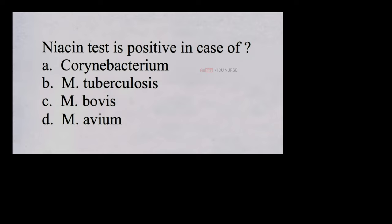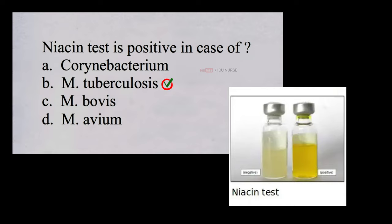Niacin test is positive in case of A. Corynebacterium, B. M. tuberculosis, C. M. bovis, D. M. avium. And the correct answer is B, M. tuberculosis, that is Mycobacterium tuberculosis. Niacin test will be positive in case of Mycobacterium tuberculosis.